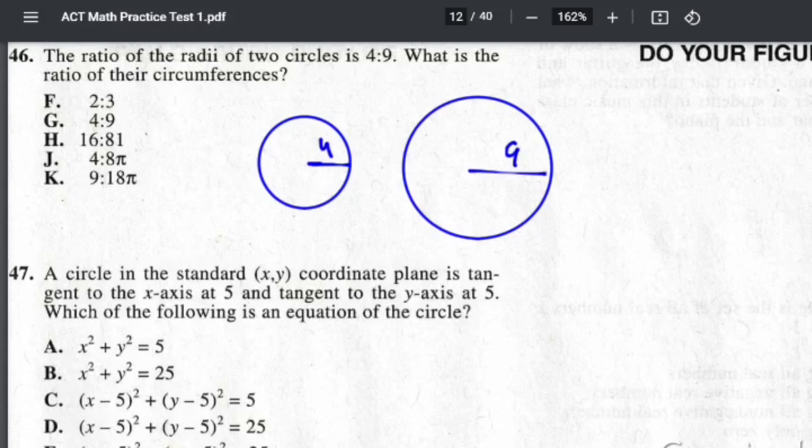To find a circumference, it is 2πr. So this will be, for the little circle, 8π because the radius is 4 here, so 4 times 2 is 8.